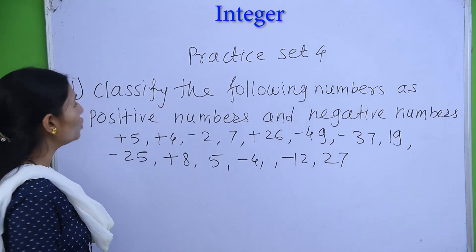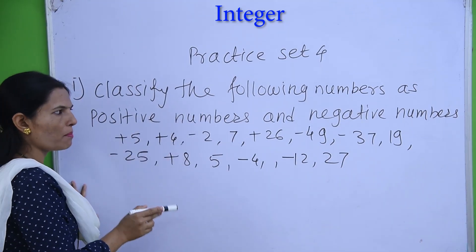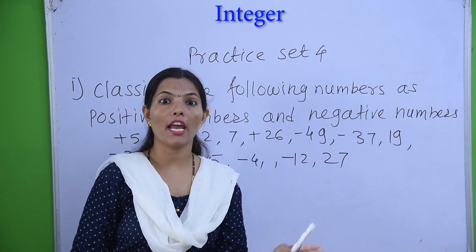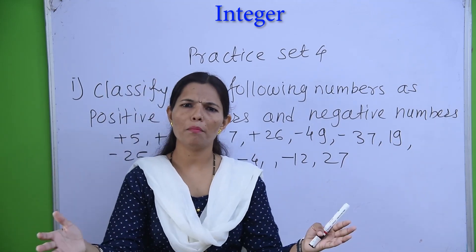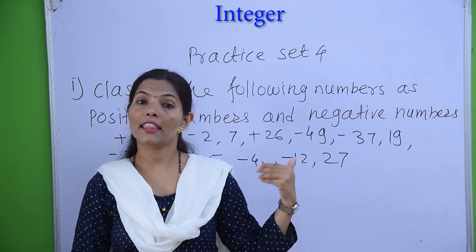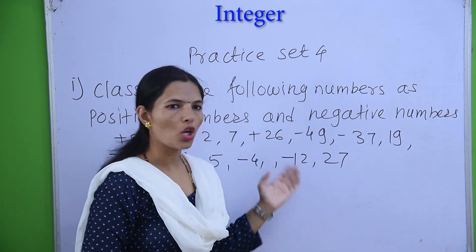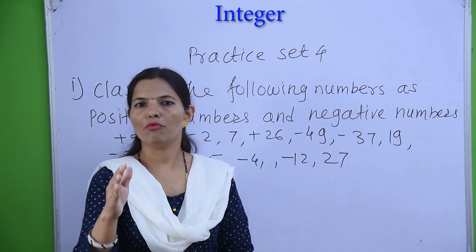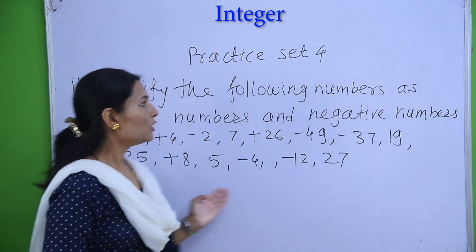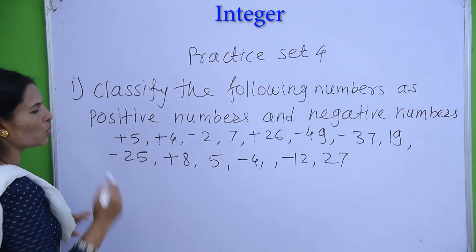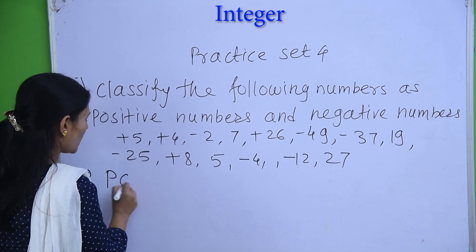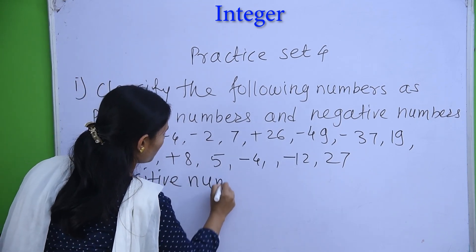The first question asks you to classify the following numbers as positive numbers and negative numbers. On the number line, the origin is in the middle — positive numbers are to the right and negative numbers are to the left. Positive numbers have a plus sign or no sign, while negative numbers must have the minus sign. You can easily identify them from the examples: plus 5, plus 4, minus 2.